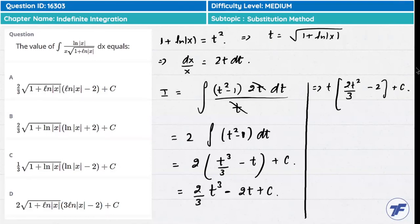Simplify to get two-thirds of under the root of 1 plus ln(|x|) minus 2. You have option number A as the answer. Good, friends.